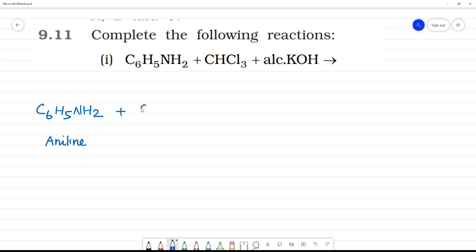Aniline, when it reacts with CHCl3, CHCl3 is chloroform. Chloroform in Alcoholic Potassium Hydroxide. Alcoholic KOH. This is Potassium Hydroxide.